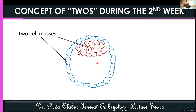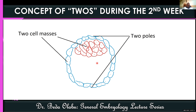The second reason we call the second week the week of twos is that the conceptus has two poles: the abembryonic pole, which leads the way during hatching, and the embryonic pole, which is used during the implantation process — and that happens during the second week.